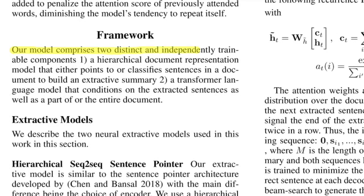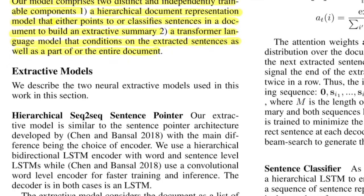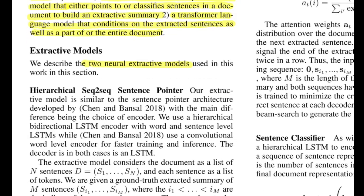The model comprises two distinct and independently trainable components. The first is a hierarchical document representation model that points to or classifies sentences in a document to build an extractive summary. The second is the Transformer Language Model conditioned on the extracted sentences and parts of the document. They describe two neural extractive models: the first is a hierarchical sequence-to-sequence sentence pointer, and the second is a sentence classifier.